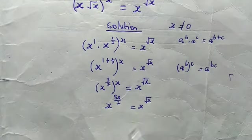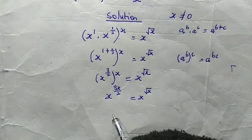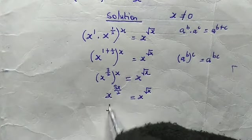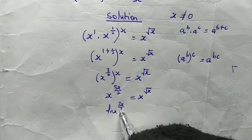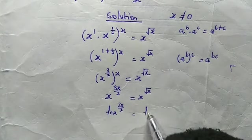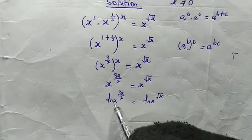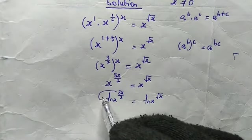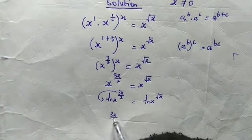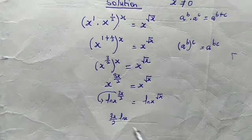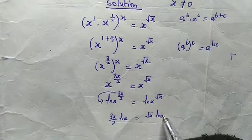To find the solutions properly, I introduced the natural logarithm. We take ln of both sides: ln of x to the power of 3x over 2, equal to the ln of x to the power of root x. With the property of logarithm, this gives us 3x over 2 multiplied by the natural logarithm of x, equal to root x times the natural log of x.